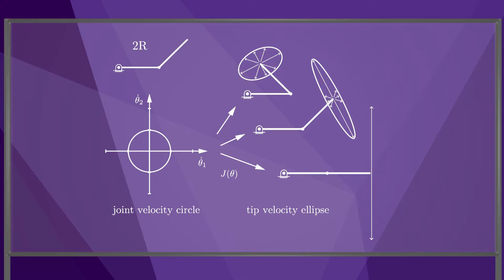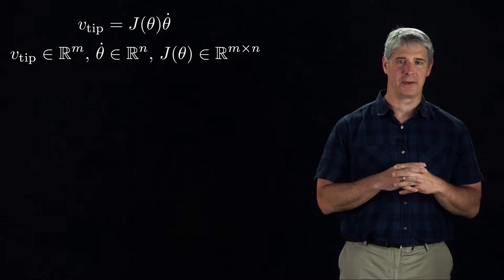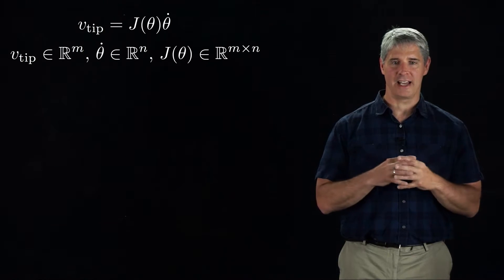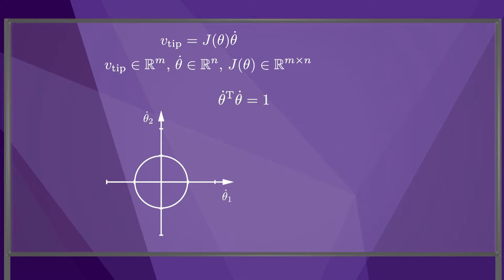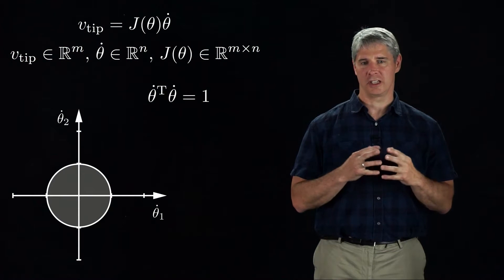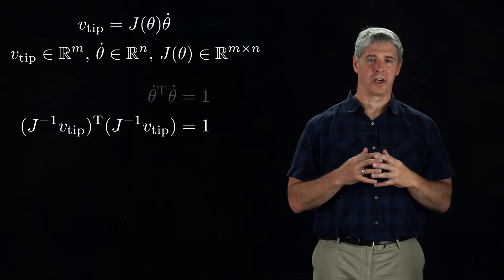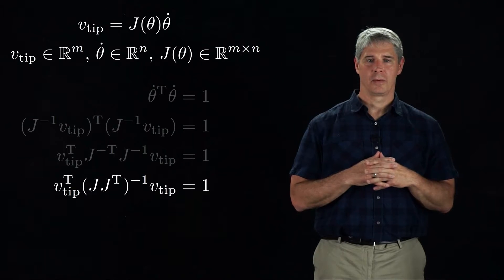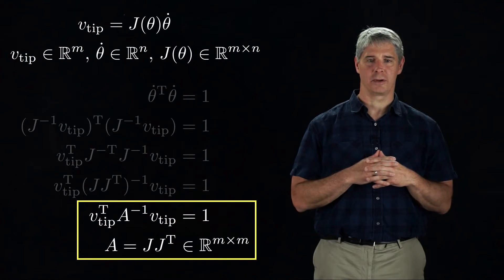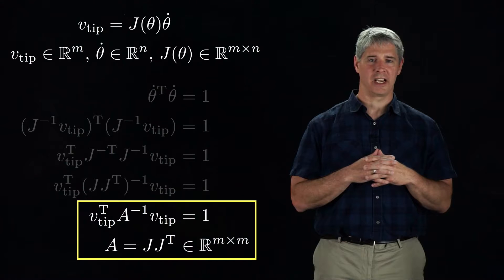To derive a general expression for the end-effector velocity ellipsoid, let's begin by assuming the end-effector's velocity is represented as the m-dimensional vector v-tip. The robot has n joints, so the Jacobian is an m by n matrix. The sphere of joint velocities, like the circle shown here, is defined by the equation theta-dot transpose times theta-dot equals 1. If we assume the Jacobian is invertible, which is not strictly necessary, then we can rewrite the equation, and rearranging we get: v-tip transpose times A inverse times v-tip equals 1, where A is the m by m matrix J times J transpose.